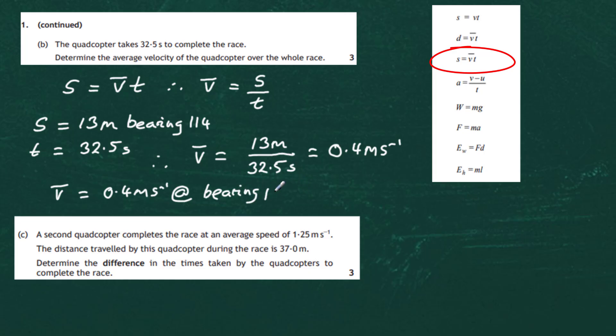We include the bearing of 114 to completely describe the vector — we don't need to add the degrees symbol since we already know what a bearing means.